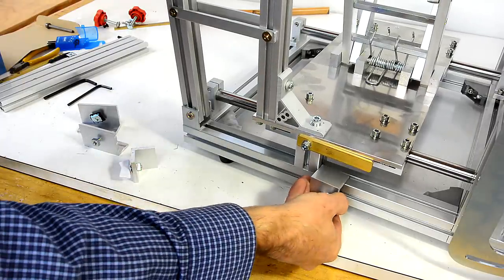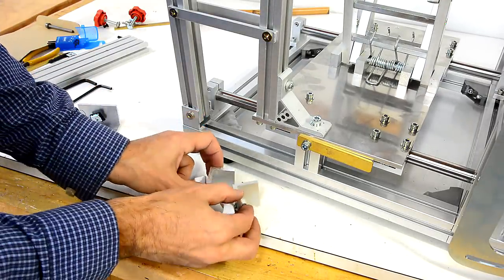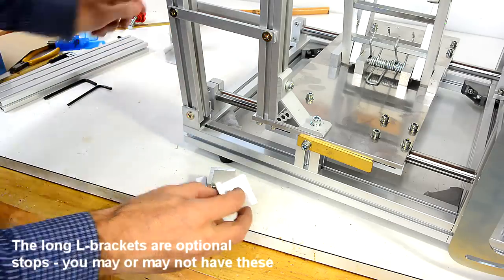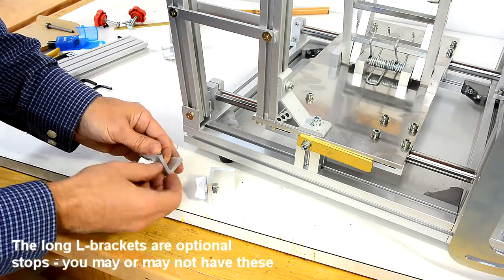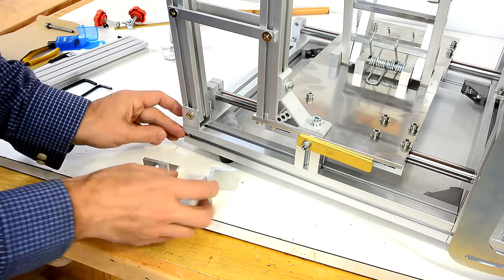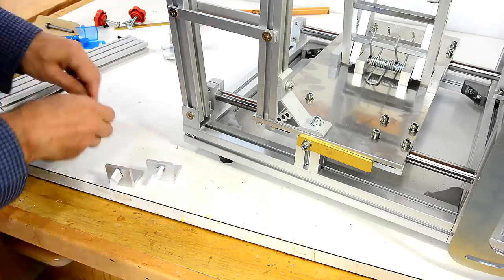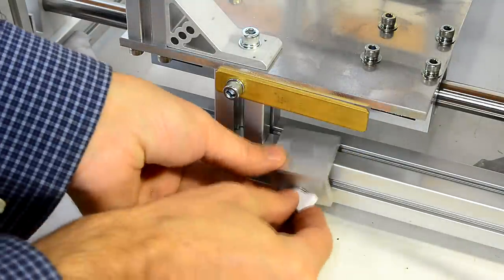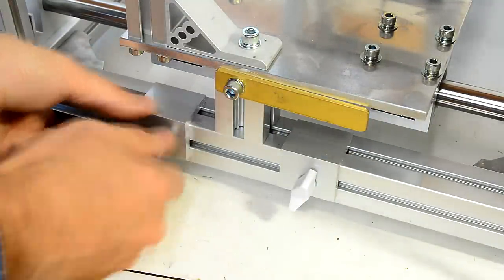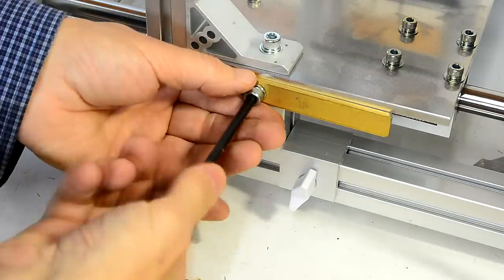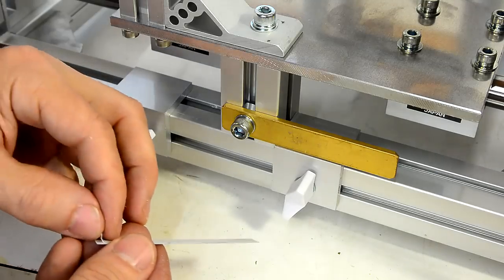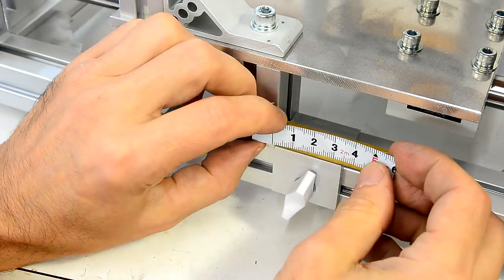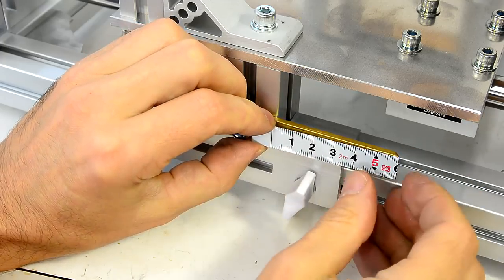Now we need to add the depth stops on here. And these are these two L-shaped brackets. Now there's long ones and short ones. The short ones are used for depth stops. And we need to slide the nut in from the end. And we have an adhesive backed scale. And that needs to go on so that the zero is exactly lined up with this edge here.